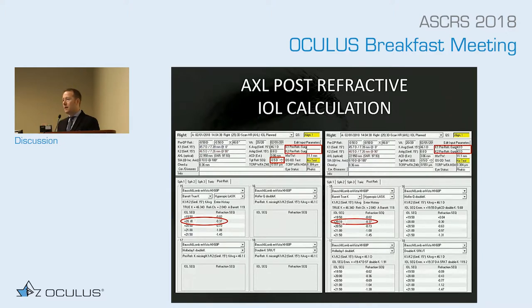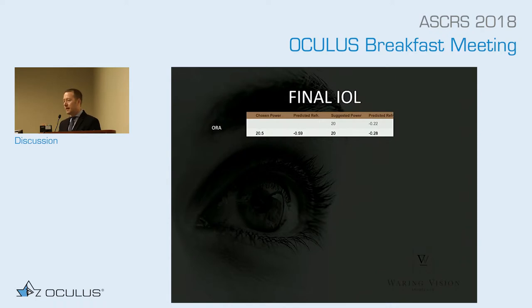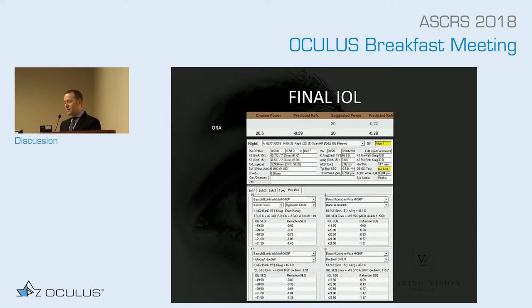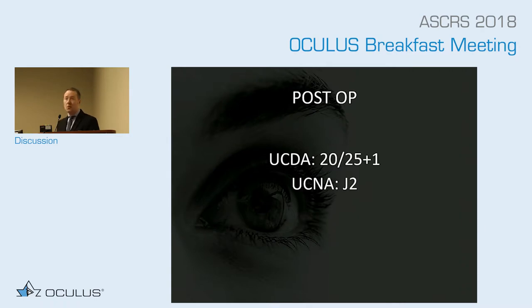When we take the information of estimated pre-op Ks and plug it into our double-K formulas, we get a 20-diopter prediction — right on the money — and the ORA confirms exactly what the double-K showed with these pre-op estimated Ks. I wanted to fudge a little for art-of-medicine reasons to make sure this patient could read, so I added a little more myopic defocus. I wish I had a 20.25-diopter lens in this case; the patient ended up with a J2, 20/25 result — very happy — but again with a monofocal lens.